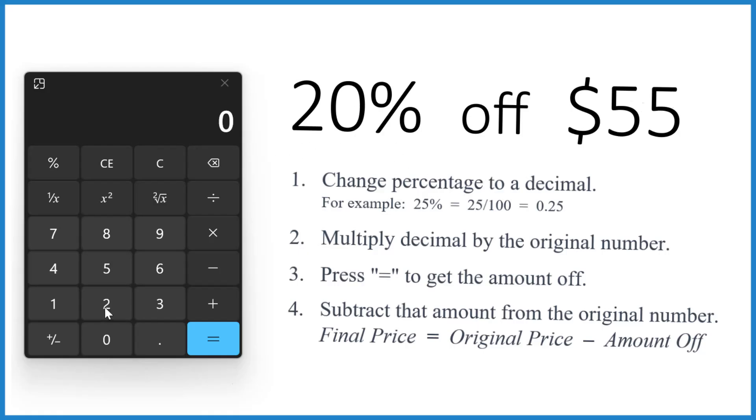We do that by dividing 20 by 100. 20 divided by 100, that gives us a decimal. So we get 0.2.